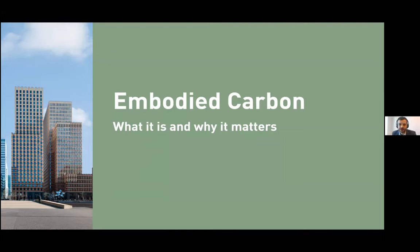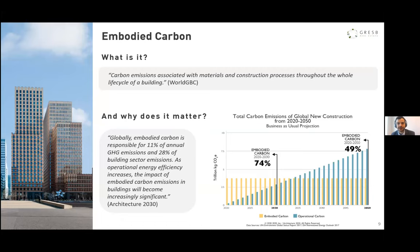Thank you for the introduction, Charles. I'm Victor, and I'm here today to talk about Embodied Carbon — what it is and why it matters. Embodied Carbon is the carbon emissions associated with materials and construction processes throughout the whole life cycle of a building. This not only means upstream emissions — the value chain emissions all the way from extraction of raw materials until actually constructing the building — but also downstream emissions, so emissions associated with maintaining, repairing, refurbishing, and end-of-life treatment of these materials.